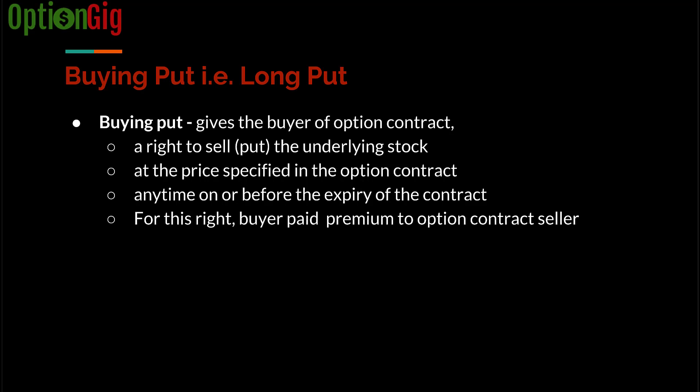How long do you have this optionality to sell the underlying stock at the strike price? The option is valid until the expiration period of the contract. As an option buyer, you can exercise your right to put the stock at the strike price anytime on or before the expiry date of the contract. And to get this right, the buyer has paid a premium to the option contract seller.